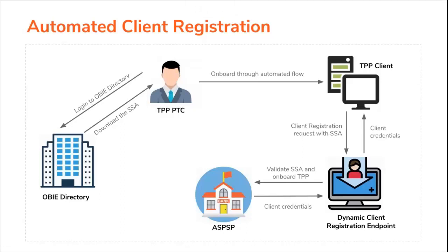Before initiating the automated DCR flow, the primary technical contact of the TPP should log in to the OBIE directory and obtain an SSA. A TPP who wants to register to an ASPSP with the Automated Flow should send a Client Registration Request including the SSA using a TPP client. Then the Dynamic Client Registration endpoint of the ASPSP will validate the request and register the TPP as a client, and respond with the client credentials. The TPP must send this request over a mutually authenticated TLS channel, using the Transport Certificates obtained from the OBIE directory.